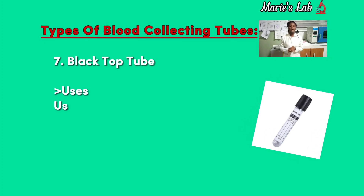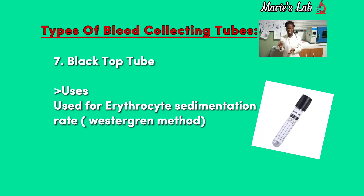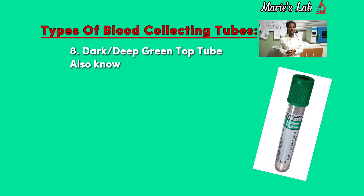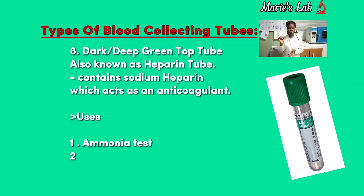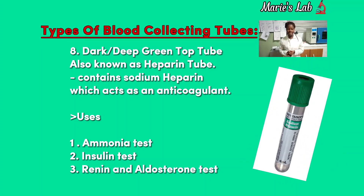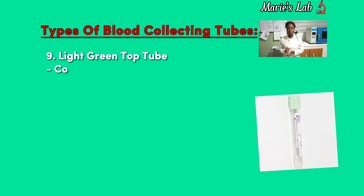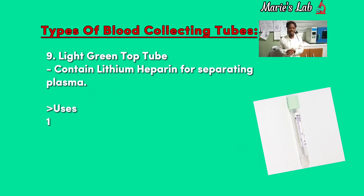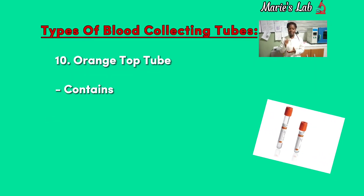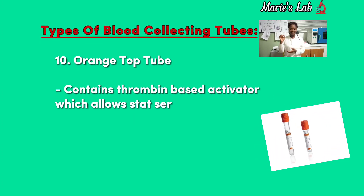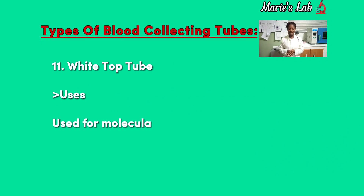Black top tube: used for erythrocyte sedimentation rate, that is the Westergren method. Dark green top tube, also known as heparin tube, contains sodium heparin which acts as an anti-coagulant. Uses: ammonia test, insulin test, renin and aldosterone test. Light green top tube contains lithium heparin for separating plasma, used for chemistry. Orange top tube contains thrombin-based activator which allows stat serum testing. White top tube used for molecular diagnosis, e.g. polymerase chain reaction and DNA amplification.